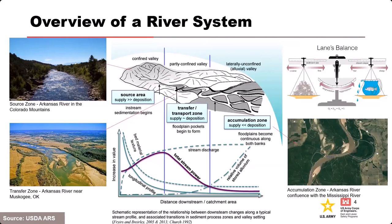Then the river works its way down into the transfer zone, the mid-river section. Here in Muskogee, Oklahoma you can see the Arkansas River continuing toward the Mississippi. This is the transfer zone — during a flood, particles get washed away and then drop out as new deposits when the flood subsides. Getting down to the mouth, where the Arkansas flows into the Mississippi, there's a lot of deposition as river velocity slows and dead load accumulates. It's a more depositional environment.